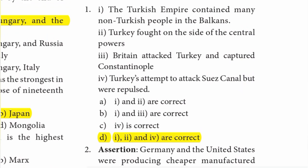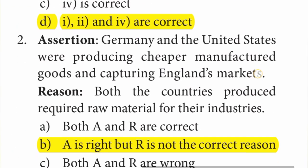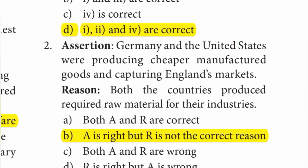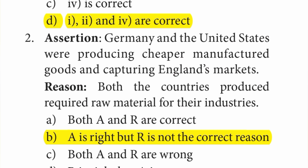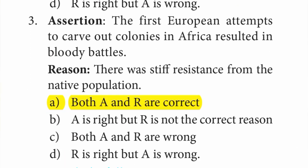Second assertion: Germany and United States were producing cheaper manufactured goods and capturing England's markets. The reason is both countries produced the required raw material for their industries. Answer is B option — assertion is right but reason is not the correct reason. Third assertion: the first European attempts to carve out colonies in Africa resulted in bloody battles. Reason: there was stiff resistance from the native population. Answer is A option — both assertion and reason are correct.